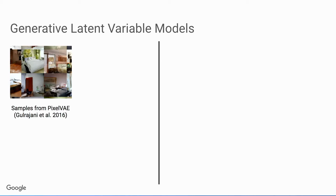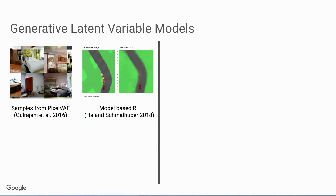One of the really interesting applications of these kinds of models is model-based reinforcement learning. The idea is that if we learn an accurate simulator of the environment, we can train our agent in this simulator without having to get expensive real-world data. David Ha trained a generative model on a car racing simulator, then trained his agent on the latent space of that model, and was able to transfer the learned agent to the real car racing simulator and get strong results.